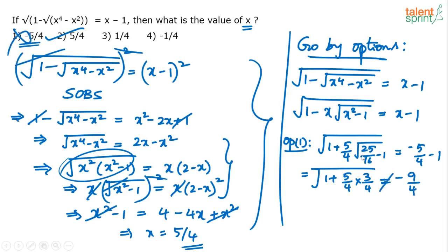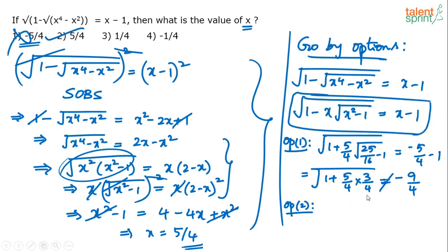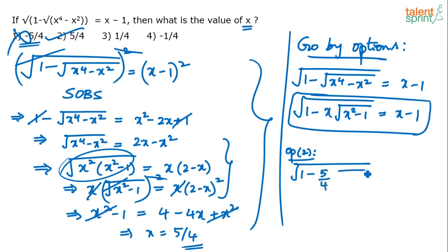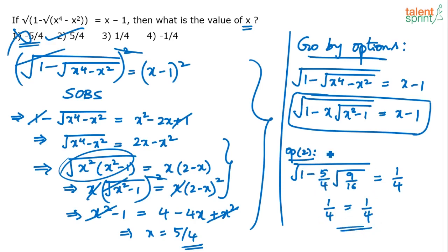Now substitute option 2: x equals 5 by 4. We have root over 1 minus 5 by 4 times square root of 25 by 16 minus 1. That is square root of 9 by 16 equals 3 by 4. So 5 by 4 times 3 by 4 is 15 by 16. Then 16 by 16 minus 15 by 16 is 1 by 16. Root of 1 by 16 is 1 by 4. The right-hand side is 5 by 4 minus 1 equals 1 by 4. Left-hand side equals right-hand side: option 2 is the correct answer.